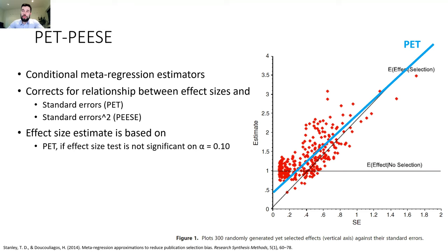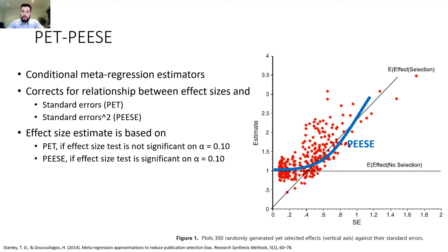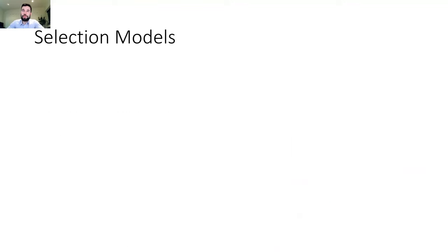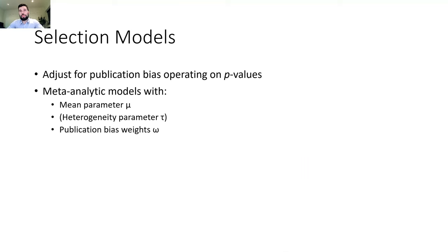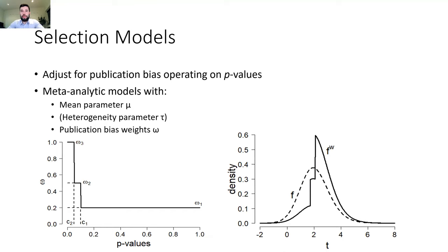Fitting either the PET or PEESE model should then provide a much better effect size estimate. The selection models on the other end extend the traditional random-effect or fixed-effect meta-analytic model with parameters mu, the heterogeneity parameter tau, and publication bias weights omega. We use a step weight function that specifies different publication bias probabilities for different p-value intervals. We can fix the relative publication probability of significant studies to one, and estimate the relative publication probabilities of marginally significant or non-significant studies. As a result, you obtain a different likelihood function — the unweighted versus the weighted likelihood function — that takes the different publication probabilities at different p-value intervals into account.